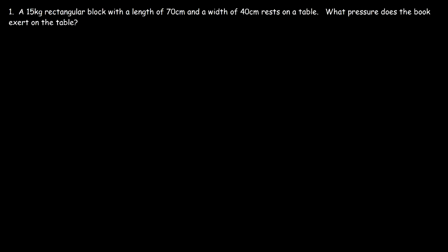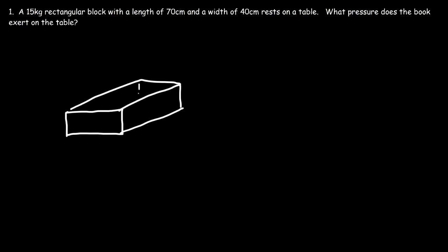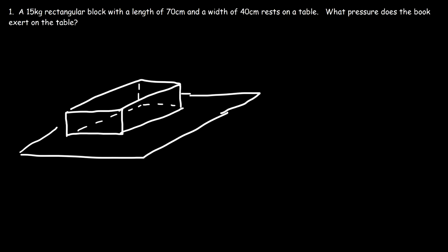Let's try this problem. A 15 kilogram rectangular block with a length of 70 centimeters and a width of 40 centimeters rests on the table. What pressure does the book exert on the table? So let's say this is the book and it's on a table. That book is going to exert a weight force on the table, and that force is applied over the bottom area of the book.